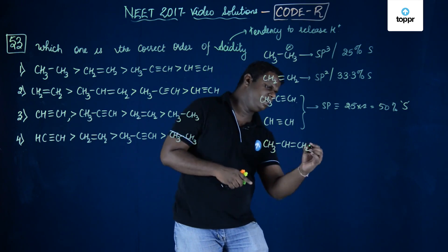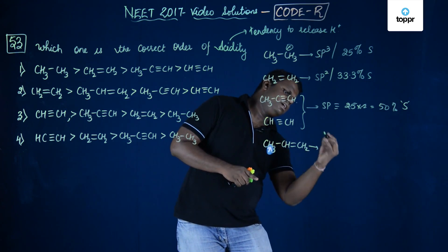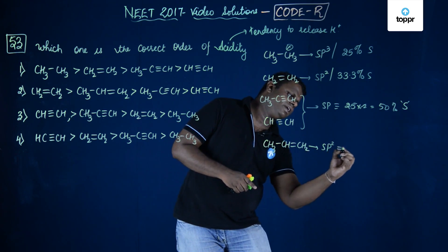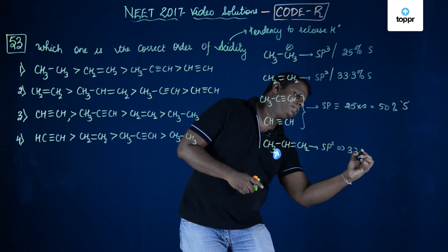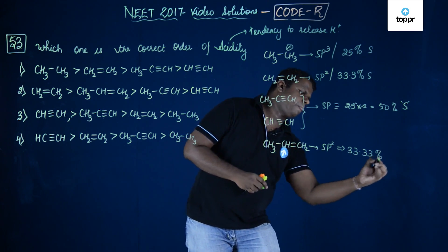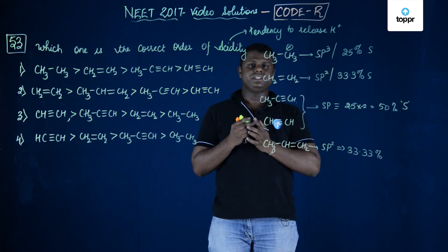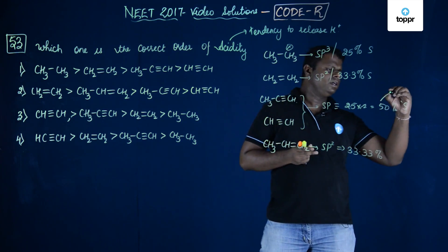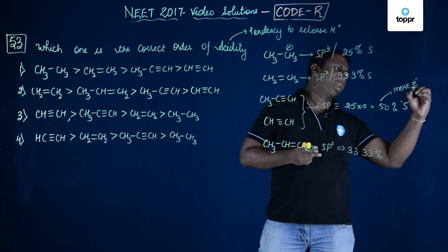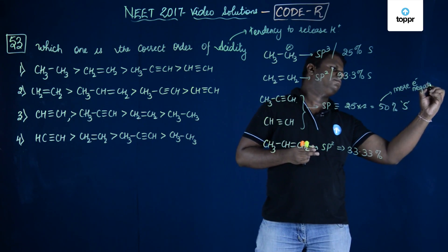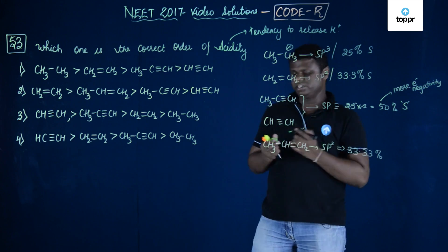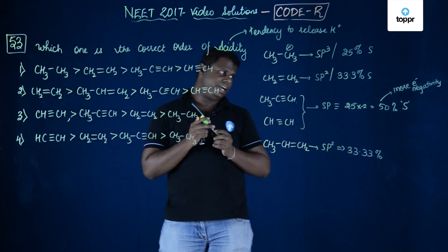If you could see here, this also has SP2 hybridization and has 33.33% S character. More the percentage s character, more is the electronegativity. More the percentage s character, more is the electronegativity.